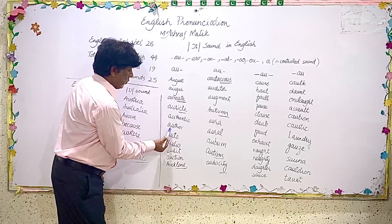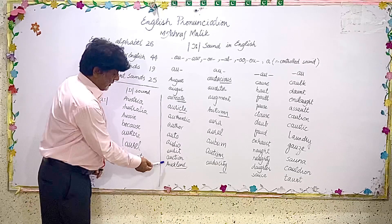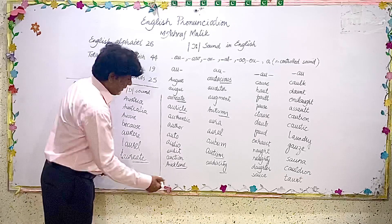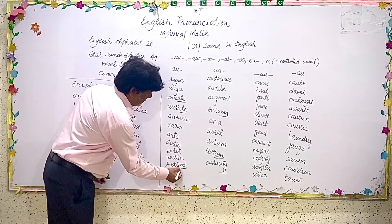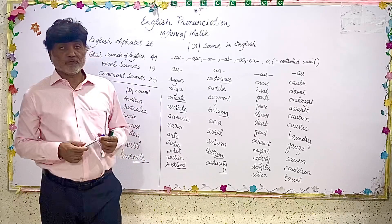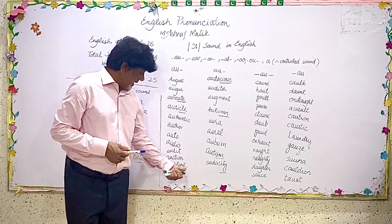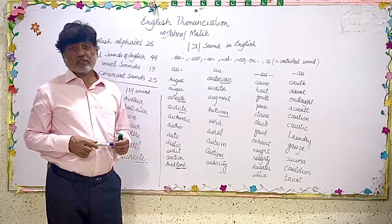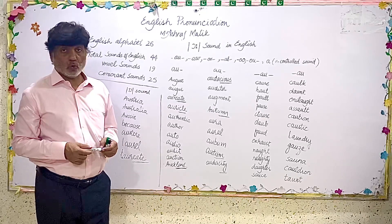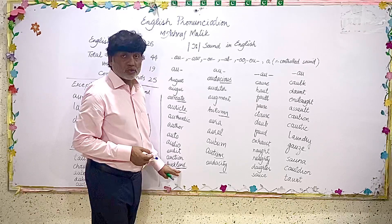Authentic, author, auto, audio, audit, audition, Auckland. Here you see that -LAND is underlined. When -LAND joins any other word as a suffix or any other combination of letters, -LAND becomes reduced and gives the sound -LAND. So this is 'Oakland' — not 'Oakland' but 'Oakland.' Although there are some exceptions to this rule.